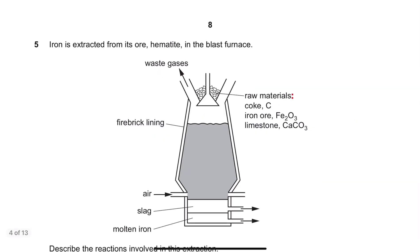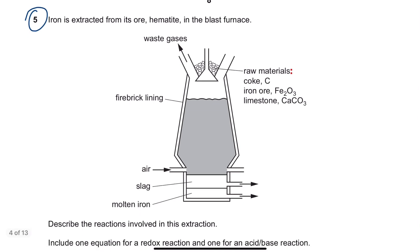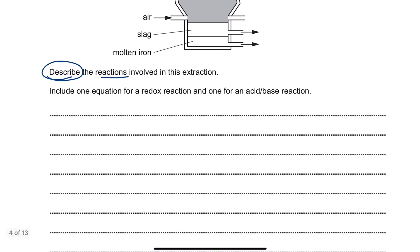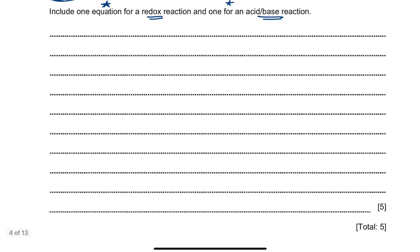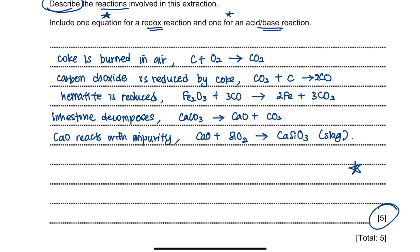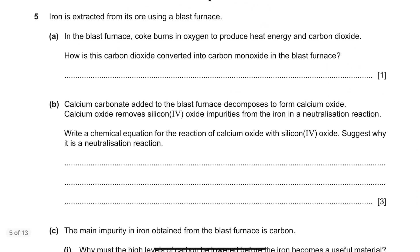This is from the specimen paper of 2020, Question 5. The question is repeated: iron is extracted from its ore hematite, and you are asked to describe the reactions involved, including one equation for the redox reaction and one for the acid-base reaction. This question gives five marks — all you need to do is list the same five steps previously discussed. Please memorize them accordingly.